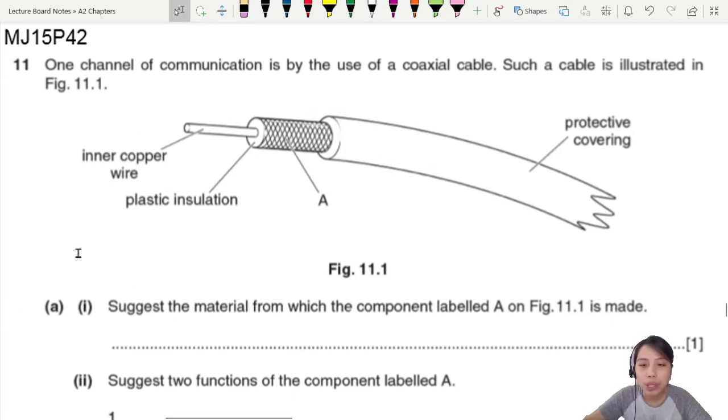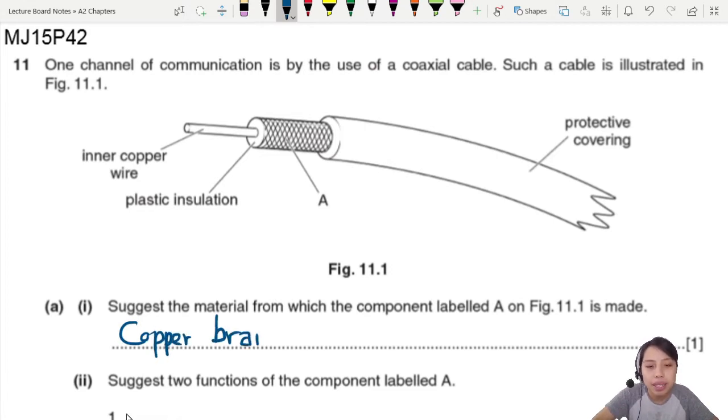Suggest the material from which the component labelled A here is made out of. So we know it's going to be a thin wire braid. But what material? They want the name. So we say it's going to be a common one you can say is copper. So a copper braid. Some metal. As long as you give some metal, CIE is fine with you.